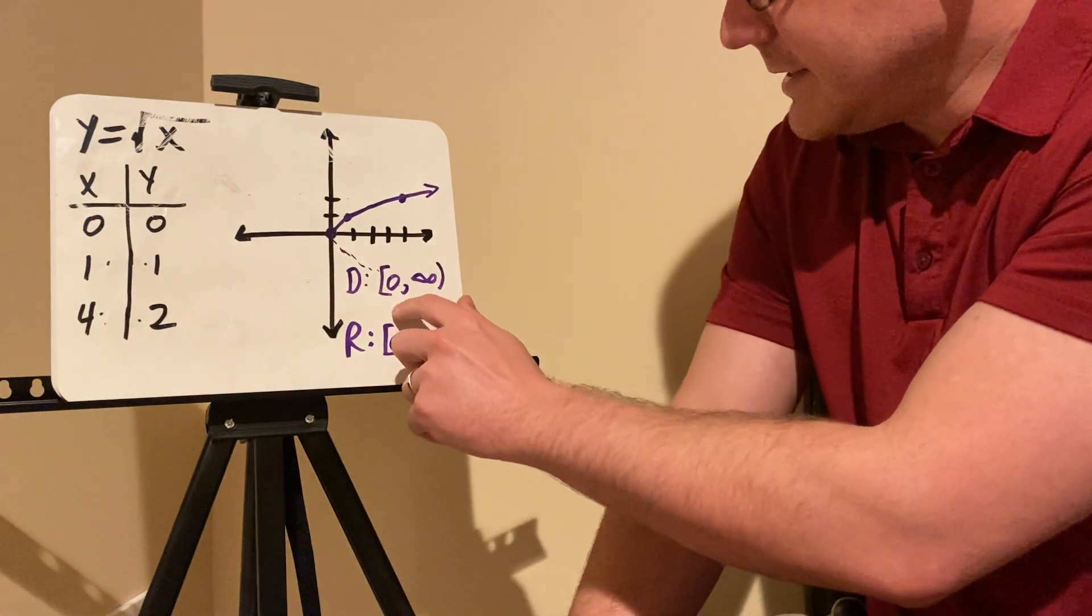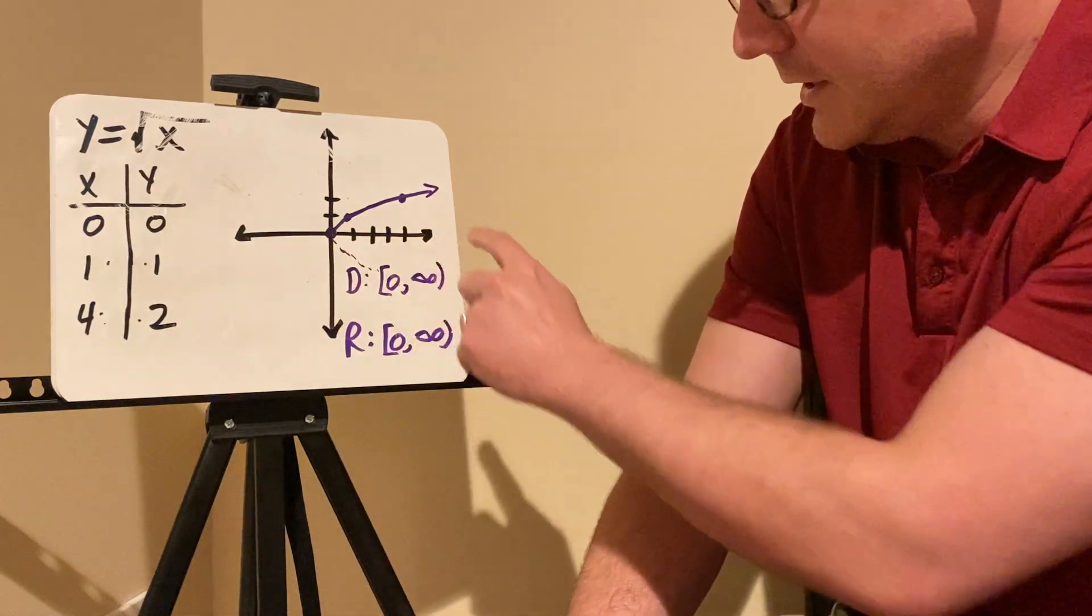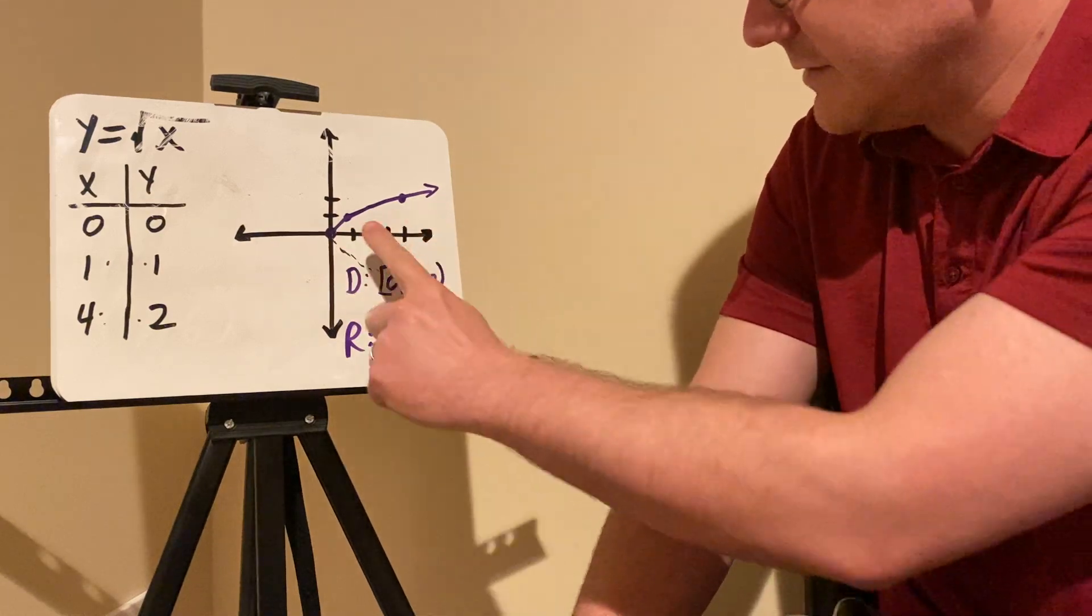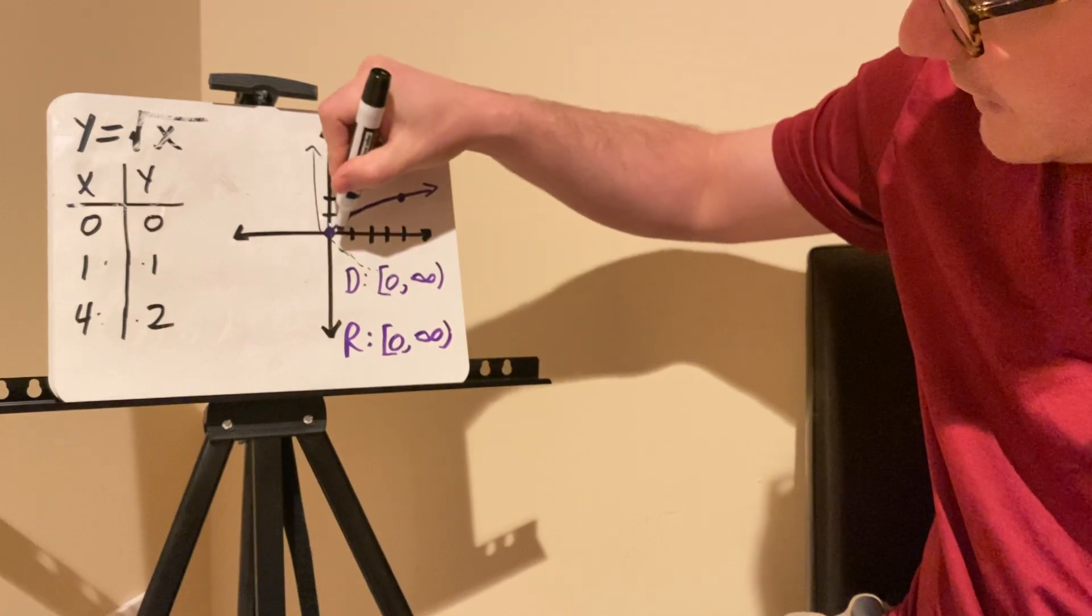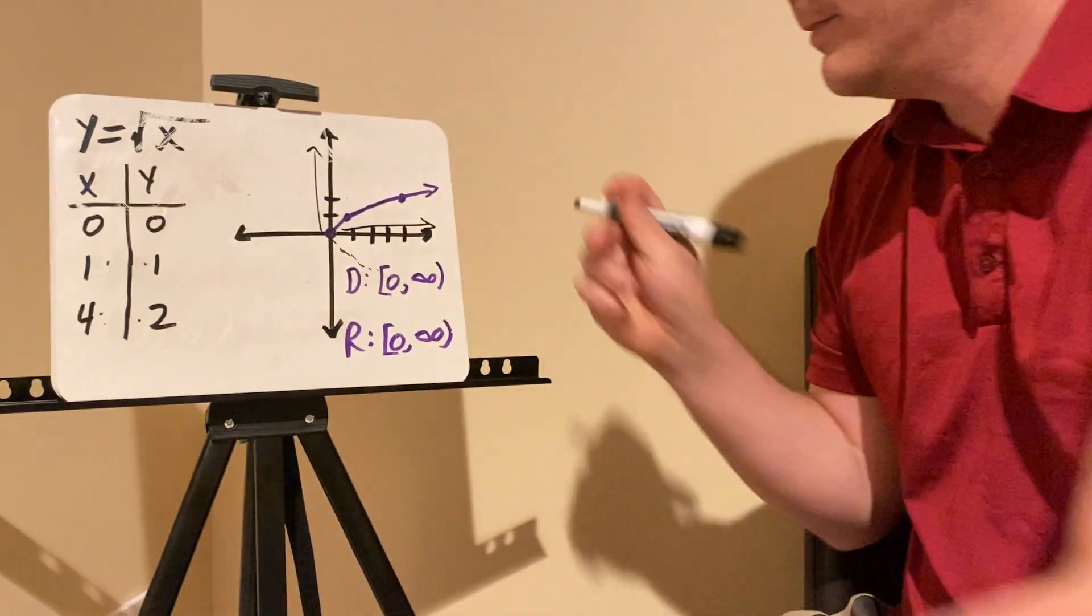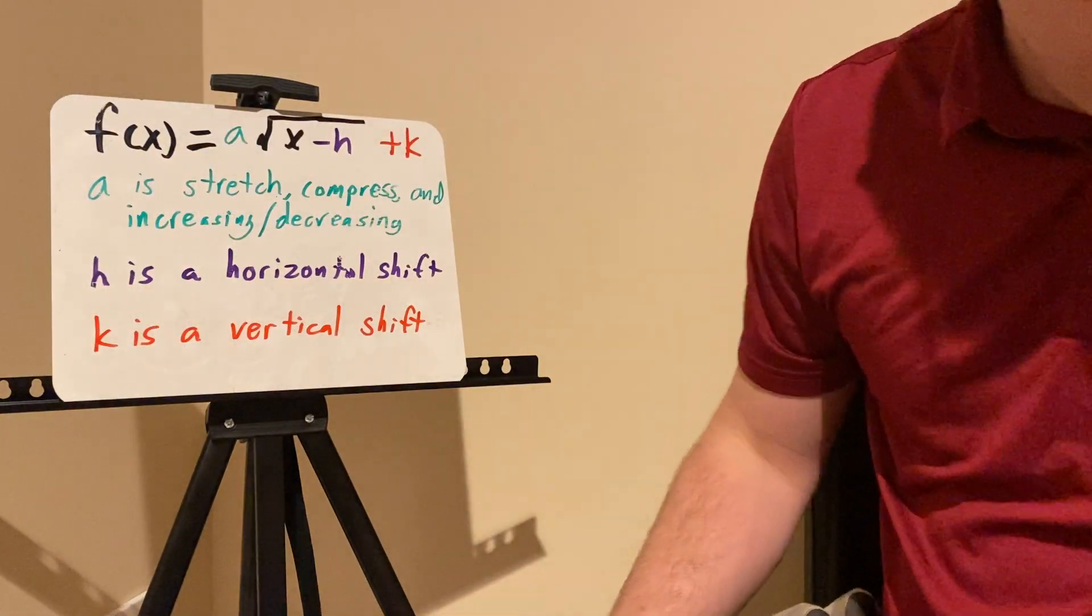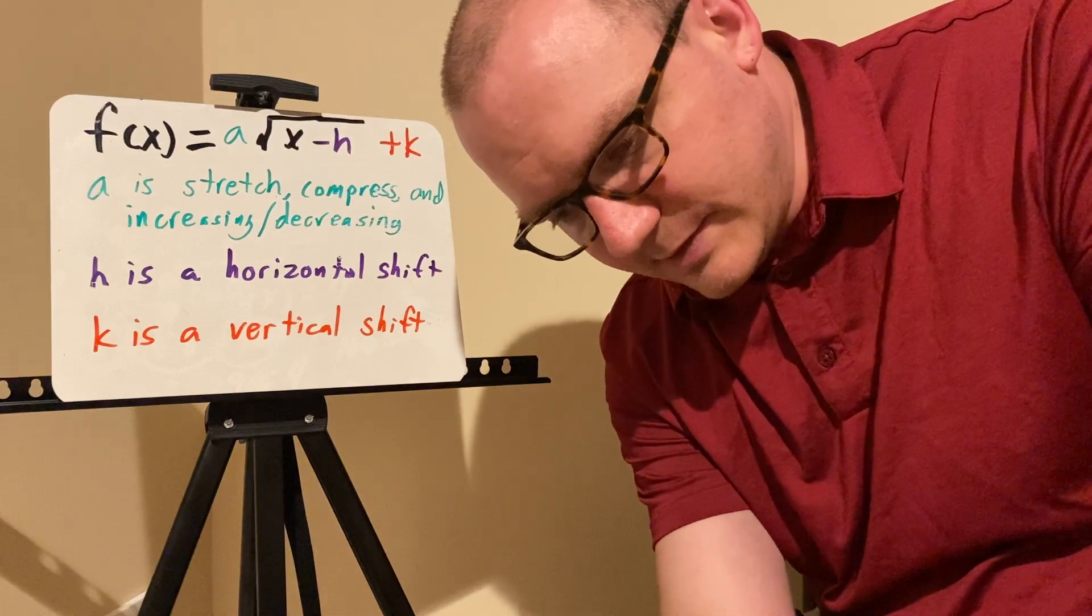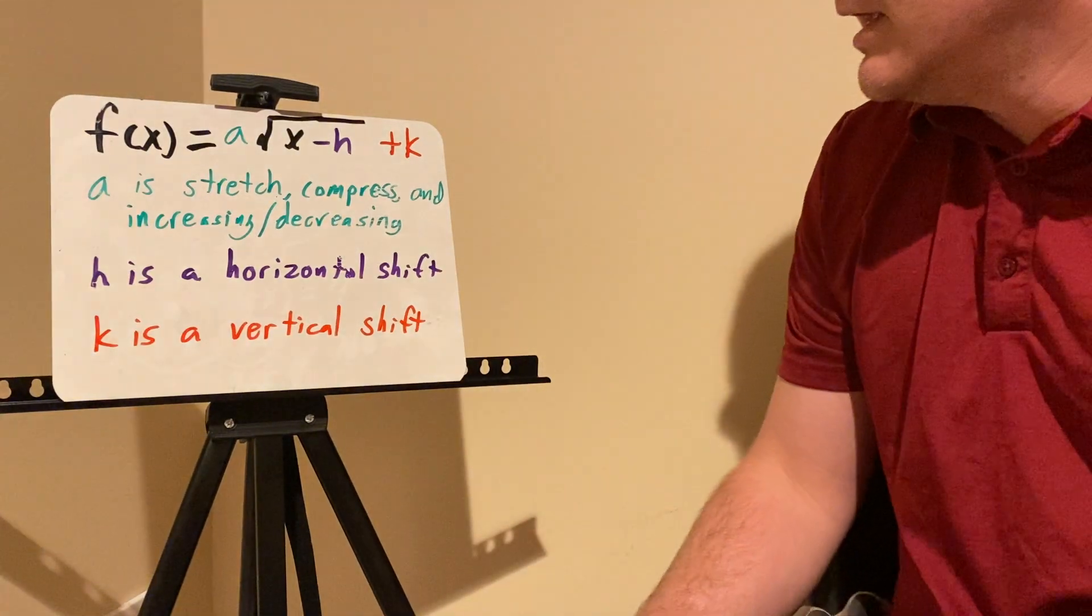Your domain for this is going to include 0 and go all the way to positive infinity, and your range is going to be 0 and will eventually get up to positive infinity as well. So my range goes from here up, and my domain goes from here over. Your y-intercept is also going to end up being the origin there, where it crosses the y-intercept, or where x is equal to 0.